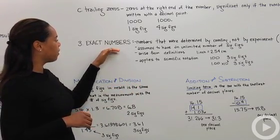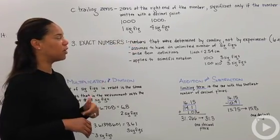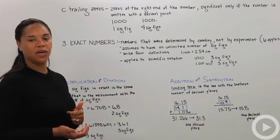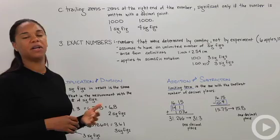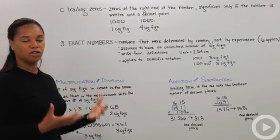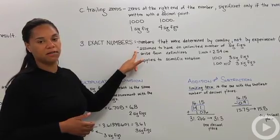Last but not least for sig figs, we have exact numbers. These are numbers that were determined by counting and not by doing an experimental procedure. For instance, if you had six apples or 10 pens or something of that nature, those guys are just the number that they are. So they're assumed to have an unlimited number of significant figures.